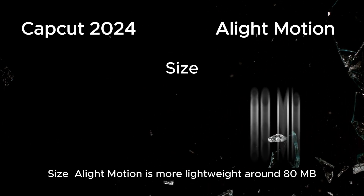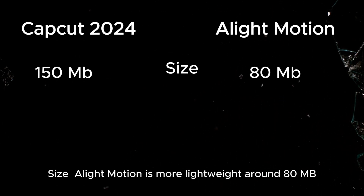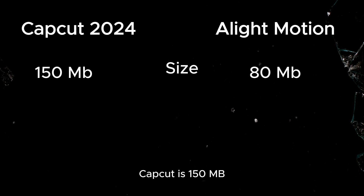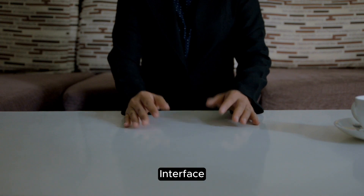Size: AlightMotion is more lightweight, at around 80MB, while CapCut is 150MB, making AlightMotion quicker to download and less demanding on storage.